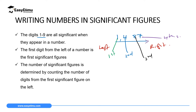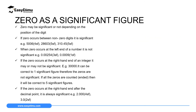Consider another number like 240. Starting from the left: the first significant figure, second, and then the third. Now since 0 is not between 1 and 9, zero can be significant or not significant when it appears in a number — but it depends on its position, whether it is on the left side, the right side, or in between digits. The position of zero determines its significance.